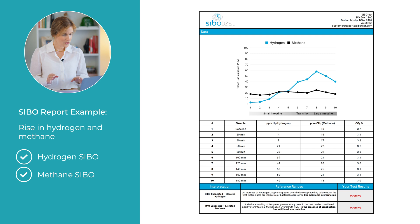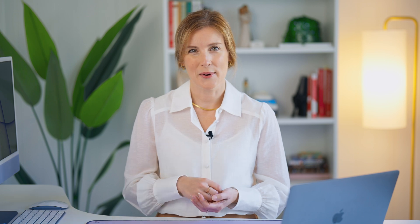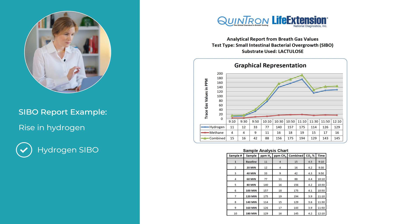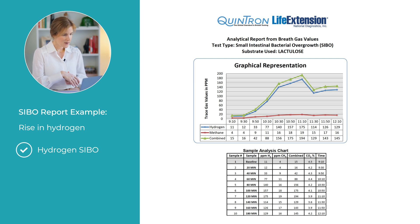Now let's look at a couple of example labs that show positive results for SIBO. First is hydrogen-dominant SIBO. This client has a rapid rise in hydrogen levels exceeding 20 parts per million within the first 40 minutes. This is a really classic SIBO result and suggests an overgrowth of hydrogen-producing bacteria fermenting the sugar substrate quickly as it travels through the small intestine. These high levels typically correlate with symptoms like bloating and diarrhea, which was true for this client.